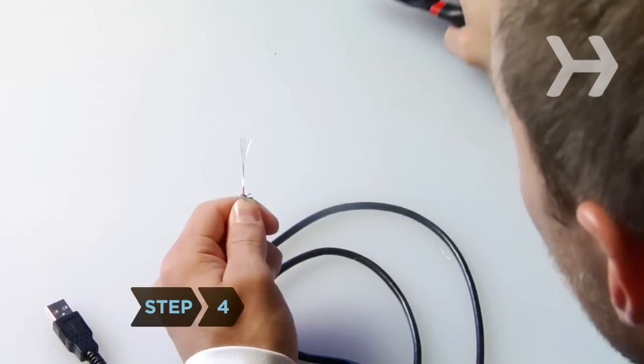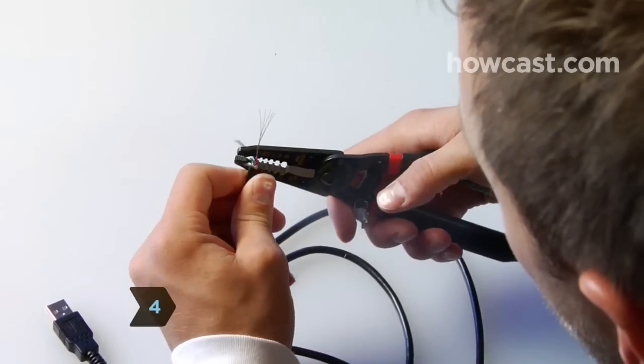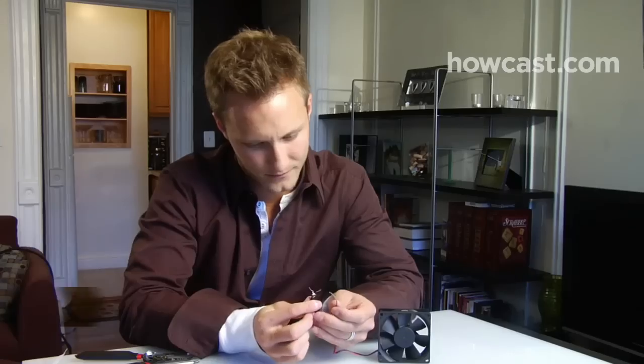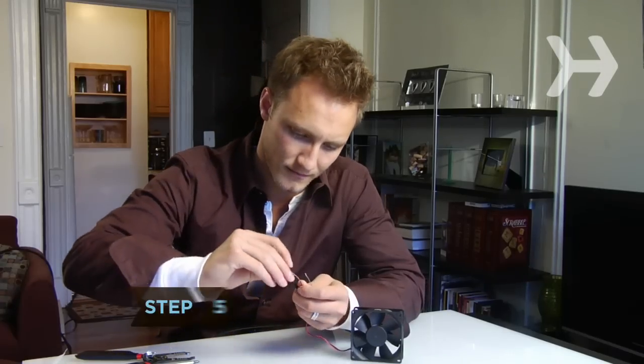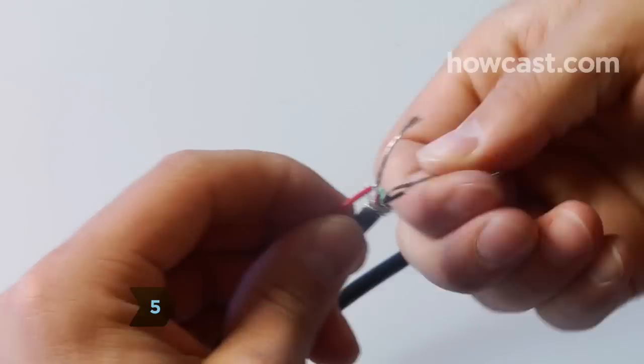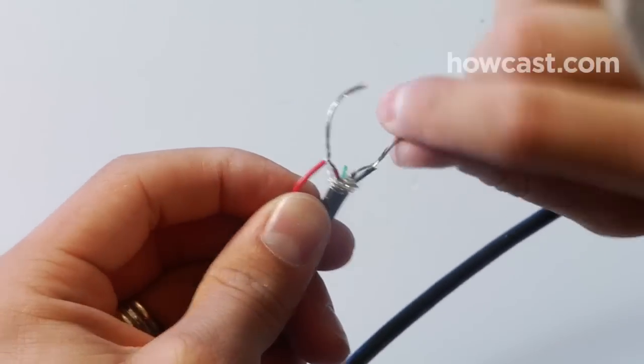Step 4. Strip a half-inch of the protective coating from the red and black USB wires. Step 5. Twist the exposed USB wires to the exposed wires from the computer fan, red to red and black to black.